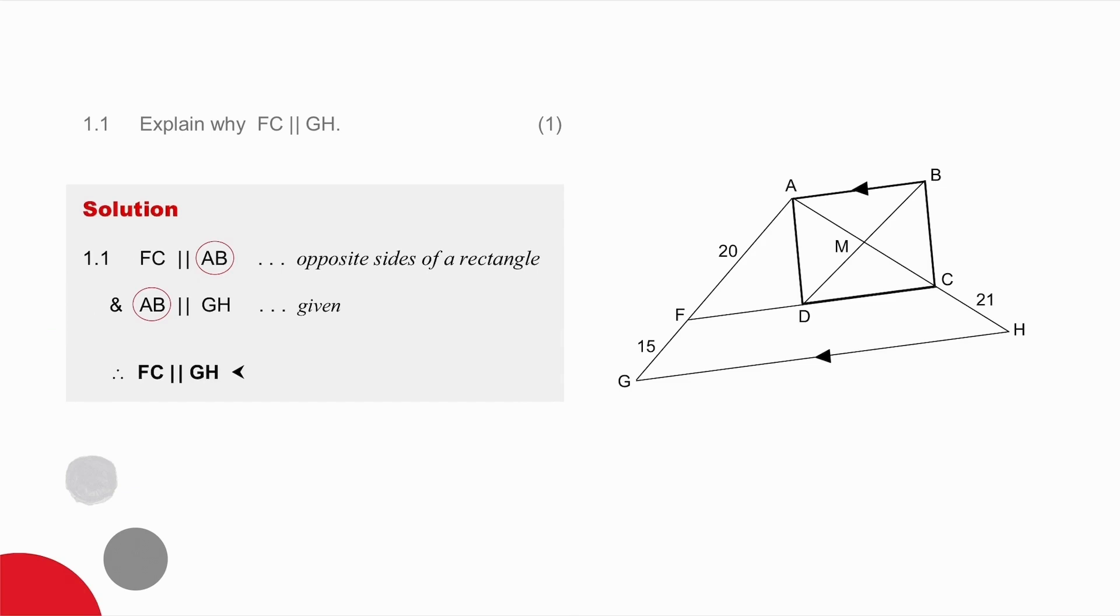Question 1.1 asks you to explain why FC is parallel to GH. It's only worth one mark so I need to be able to do it fairly quickly. You know that ABCD is a rectangle. What do you know about the opposite sides of a rectangle? You know that they are parallel.